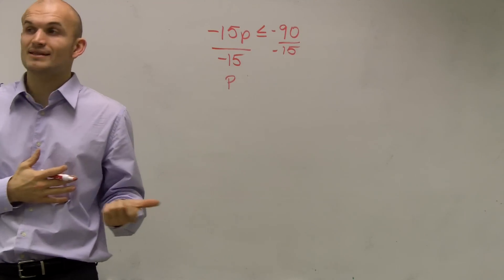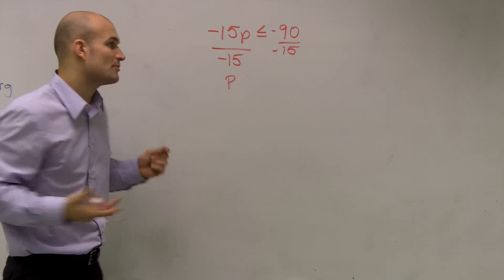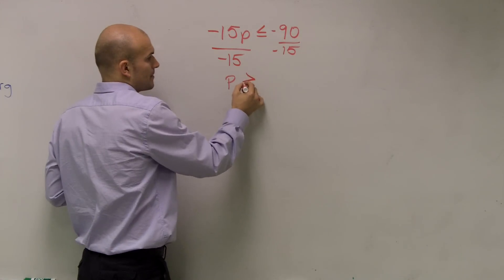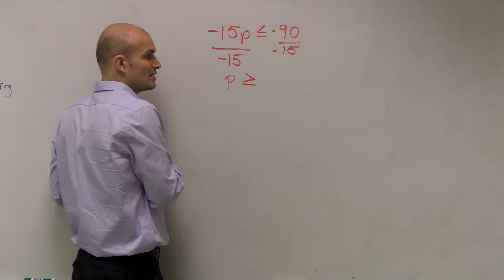And remember, guys, I showed you before why this happens. But when you divide by a negative number, you need to remember we're going to flip the sign. So it becomes P is greater than or equal to.